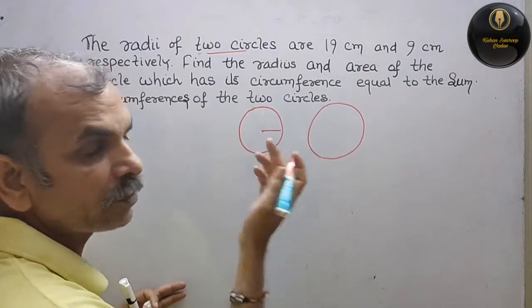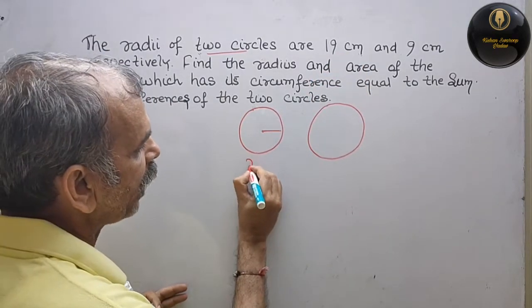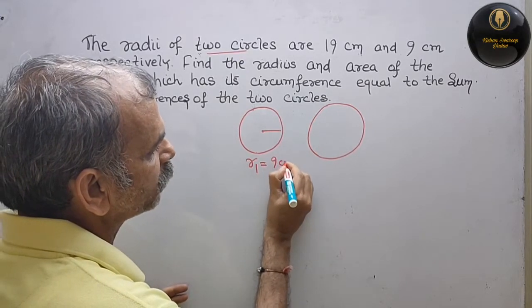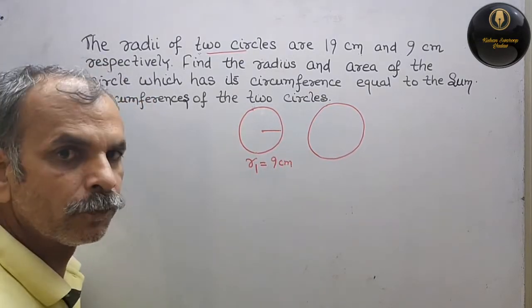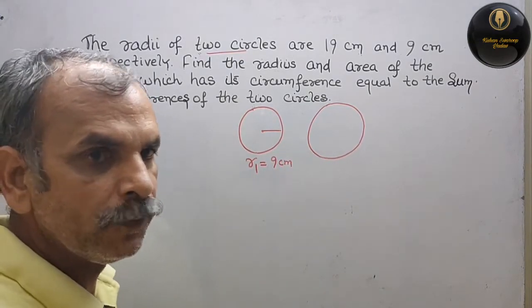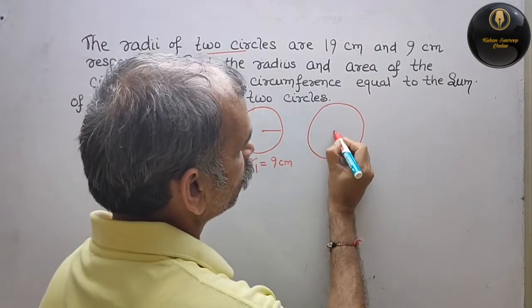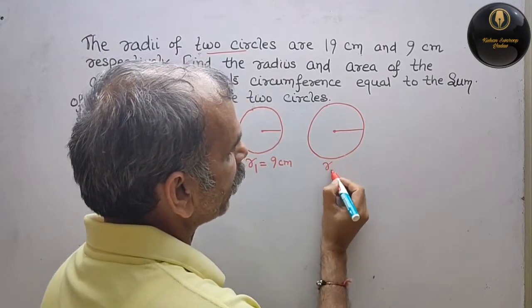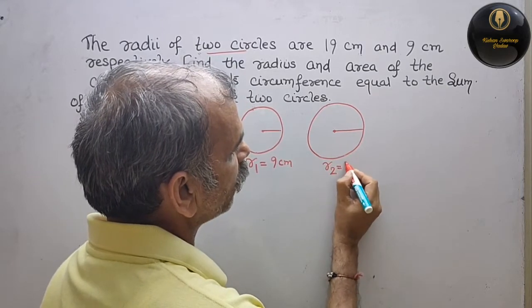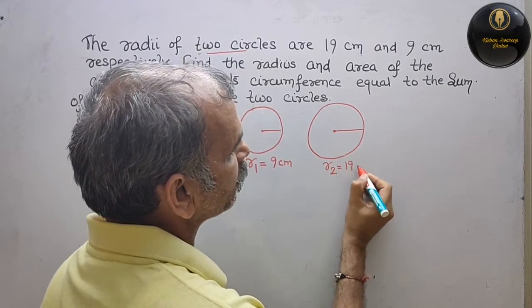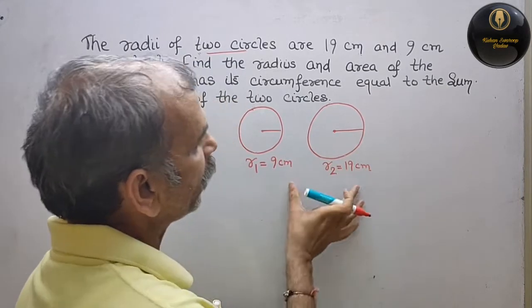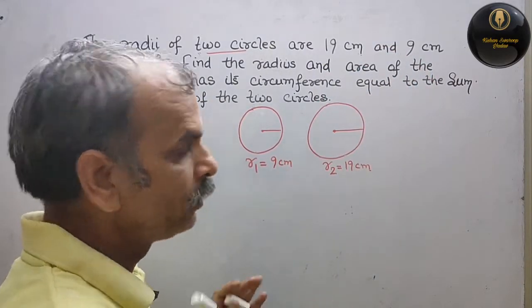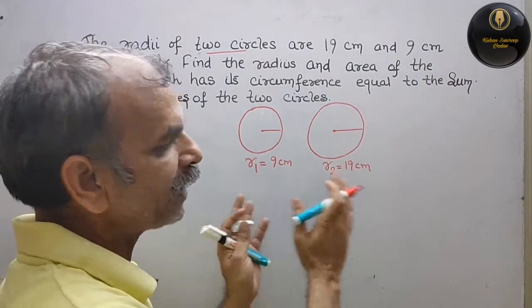So we will write R1 is equal to 9 cm. Next, this is another circle, R2 is equal to 19 cm. Maine ulta likh diya — so R1 and R2.